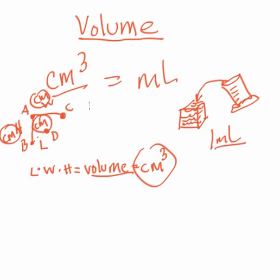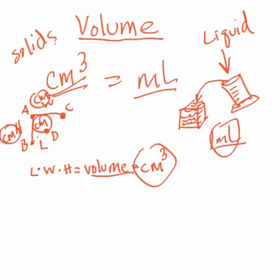So really a cubic centimeter of space is equal to one milliliter of space. Milliliters tends to refer to liquid or liquids or gases. Cubic centimeters again can refer to solids, again liquids or gases. But again cubic centimeters and milliliters are the same thing.